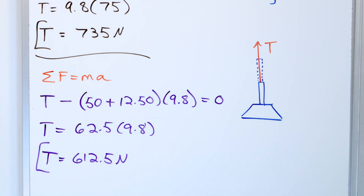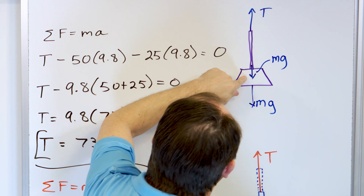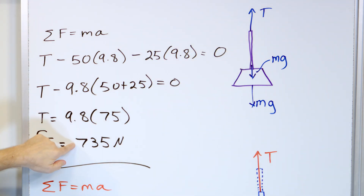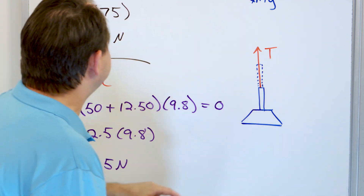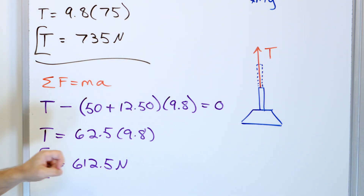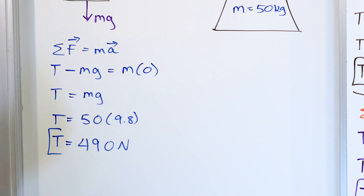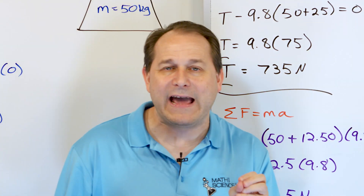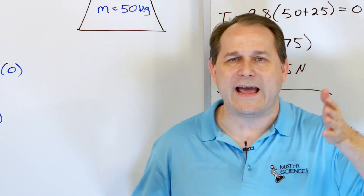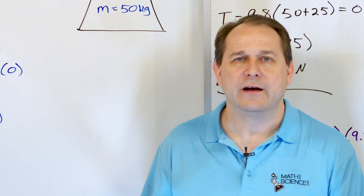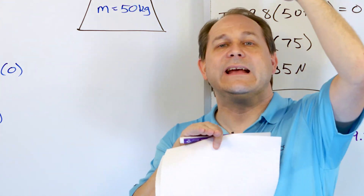So looking at the entire chain: the tension at the very top is supporting the weight of the chain plus the entire chandelier, making it the maximum at 735 newtons. The tension at the middle link is supporting only half the chain plus the chandelier, giving 612.5 newtons. And the tension at the very bottom link is the least of all because it's only supporting the weight of the chandelier itself at 490 newtons. In every case, we applied sum of the forces equals mass times acceleration — the only difference was the masses involved.